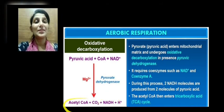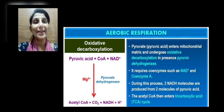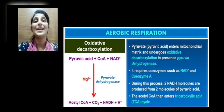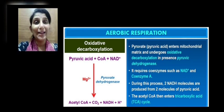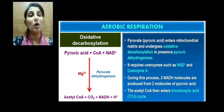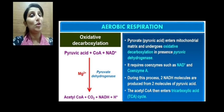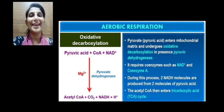The acetyl coenzyme A produced then enters the TCA cycle, also called the tricarboxylic acid cycle. So the initial step is the oxidative decarboxylation of pyruvic acid, catalyzed by pyruvate dehydrogenase in the presence of NAD⁺, coenzyme A, and magnesium ions, yielding acetyl CoA, CO₂, and 2 NADH overall. In the next module, we will learn about the fate of acetyl coenzyme A in the tricarboxylic acid cycle. Thank you.